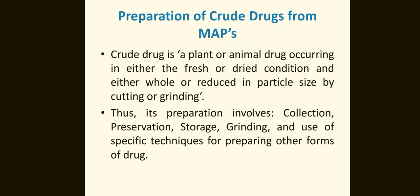Preparation of the Crude Drugs. A crude drug is a plant or animal drug occurring in either the fresh or dried condition and either whole or reduced in particle size by cutting or grinding. Its preparation involves collection, preservation, storage, grinding, and use of specific techniques for preparing other forms of drugs.